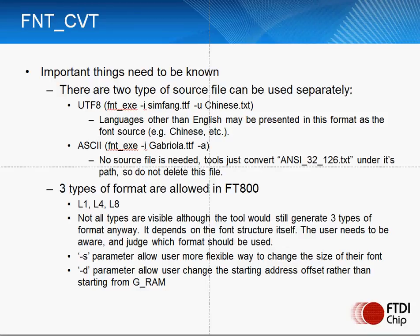There are two types of source files that can be used: UTF-8 format, typically for non-English languages such as Chinese and Arabic, or ASCII, which is standard on Windows. There are three types of output format: L1, L4, and L8. Note that although not all types may be visible, they will still be generated and will take up memory space, so the user must judge carefully which format and font to use.